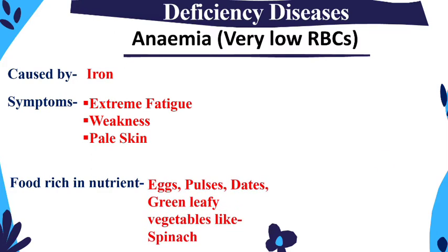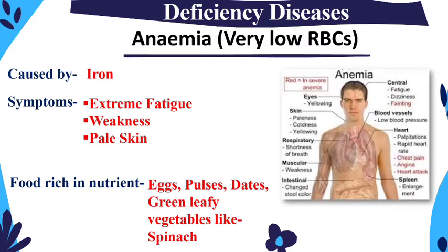Next is Anemia, caused by iron deficiency. Foods rich in iron include eggs, pulses, dates, and green leafy vegetables like spinach. Symptoms of anemia include yellow eyes, paleness, coldness, shortness of breath, weakness, fatigue, and low blood pressure.